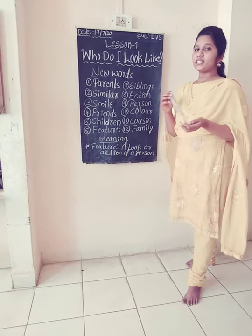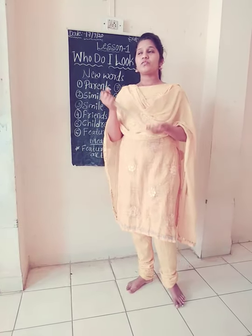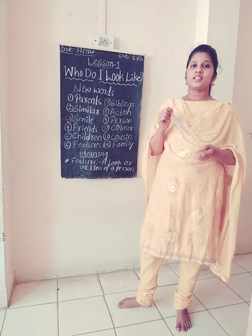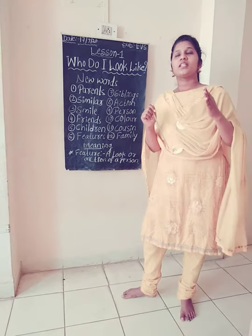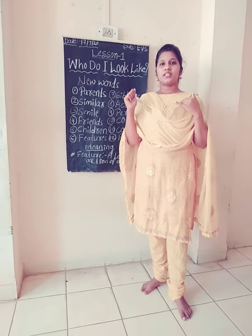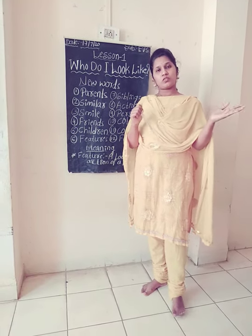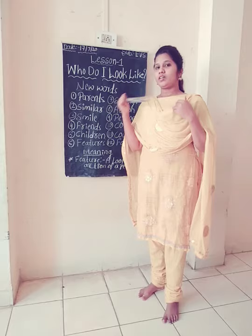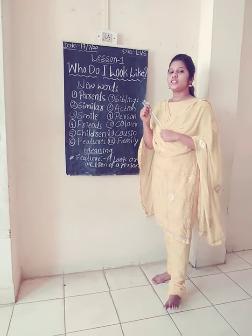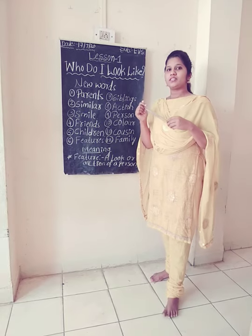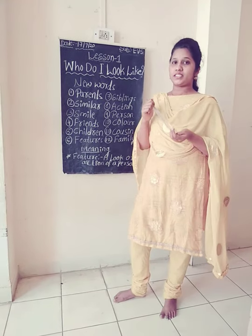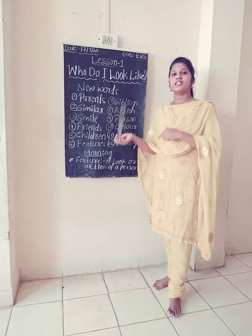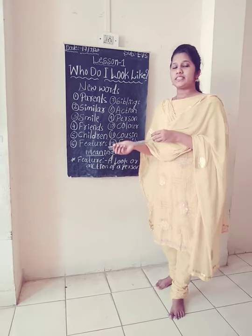Do you have any aunt and uncle? We may also look like our aunt and uncle. Why do we look like our uncle and aunt? Because uncles and aunts are part of our family — they are the brother or sister of our parents. So we look like our uncle and aunt. Do any of your cousins look like you? Yes. Why do we look like our cousins? Because cousins are the children of our uncle and aunts. So we look like our cousins.